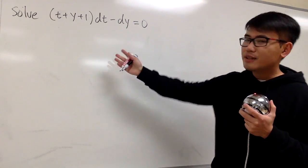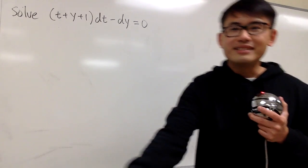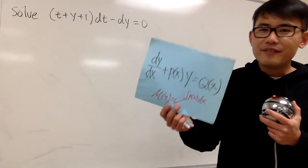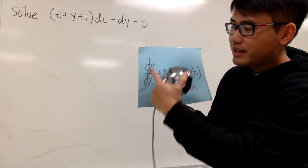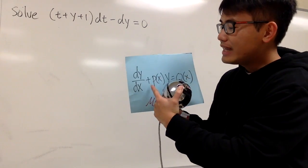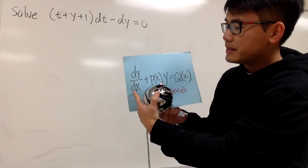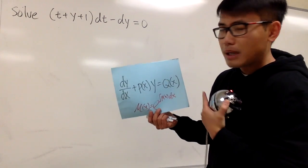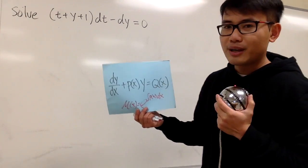This doesn't look like a linear differential equation to me. Here is the standard form: we must have the derivative first, and then we add it with some function in terms of its independent variable, and then multiply by y. Everything else should be on the right-hand side.